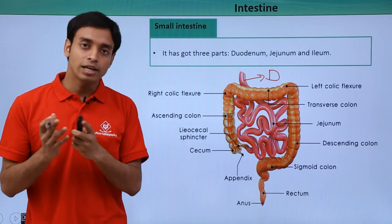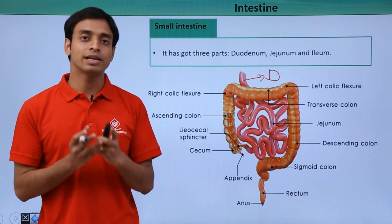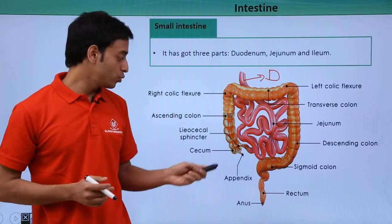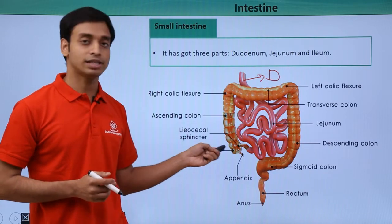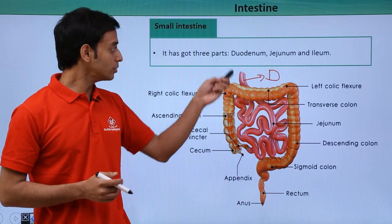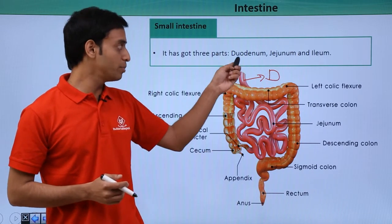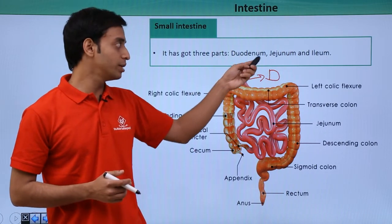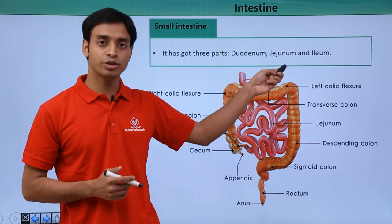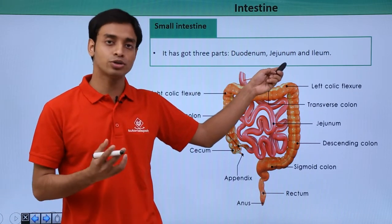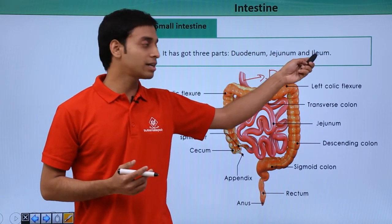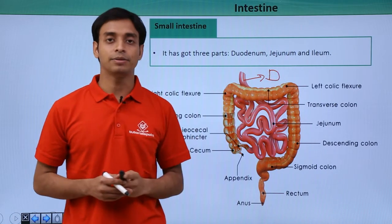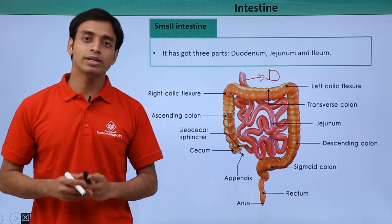The ileum leads to the large intestine at a point known as the cecum. So the three important parts of the small intestine are: the duodenum, followed by the jejunum (the middle portion), and lastly the ileum.